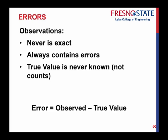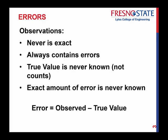When I say 'not counts,' I mean if you're observing how many cars pass by, that you can know exactly — that's an exact count. But we're talking about observations that have a measurement value. Similarly, the exact amount of error is never truly known either. We know our observed value, but the error itself can never be precisely determined.